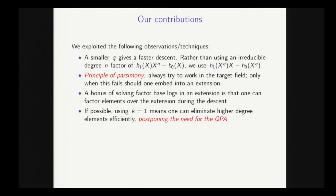The second thing we proposed is something called a principle of parsimony, which basically means do the minimum amount of work you can in order to solve the problem. So in particular, the descent should always take place in the target field. You should use this quadratic extension or cubic extension. And only when you can't work in the target field, for instance, when you're trying to solve the logs of the factor base elements, then you should take an extension of the base field. So that's necessary in some circumstances, but you shouldn't do it if you don't have to.